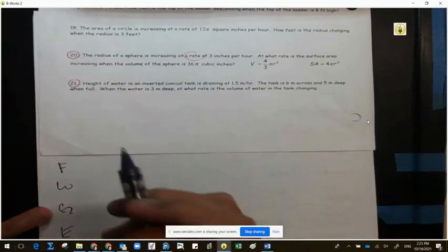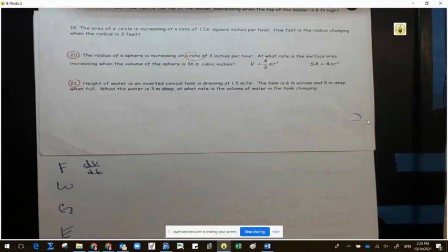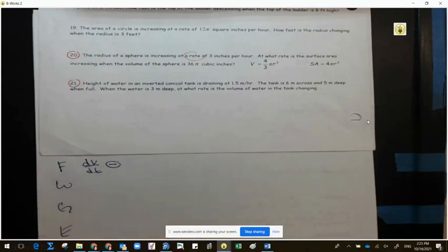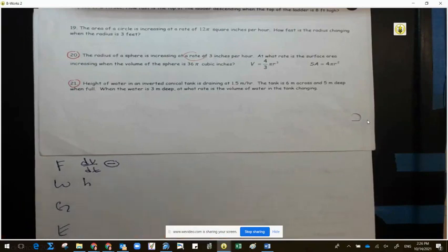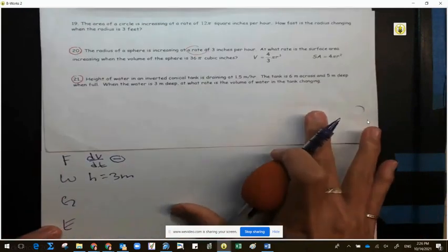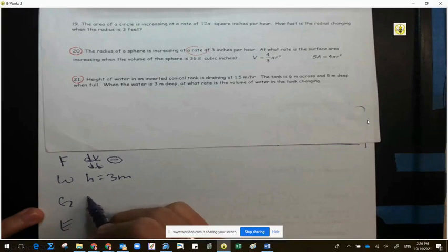Let's find our variables. What are we looking for? The rate of the volume. Is it gaining more volume or losing volume? Losing. So our anticipation is my answer better be negative at the very end, just a way to check.